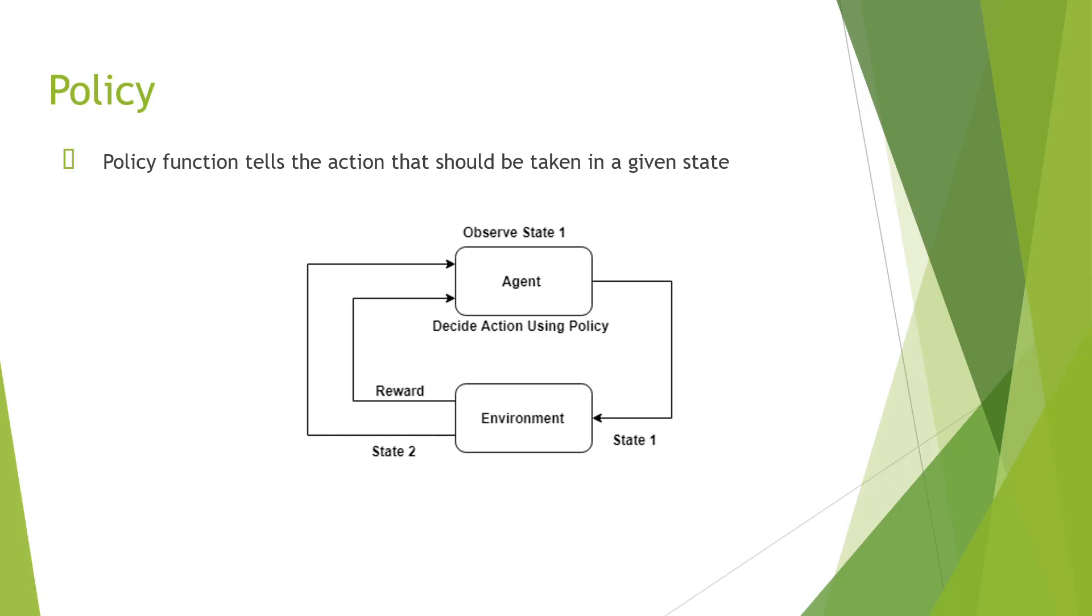The environment moves to a new state, that is state 2, because of the agent's action and returns a reward for that action. We need to keep in mind that this reward might not always be good, as the agent is learning to take the right actions in a given state, and that's the whole point of RL. So we can write the policy as a function p which takes in the state and gives out the action that should be taken in that state.